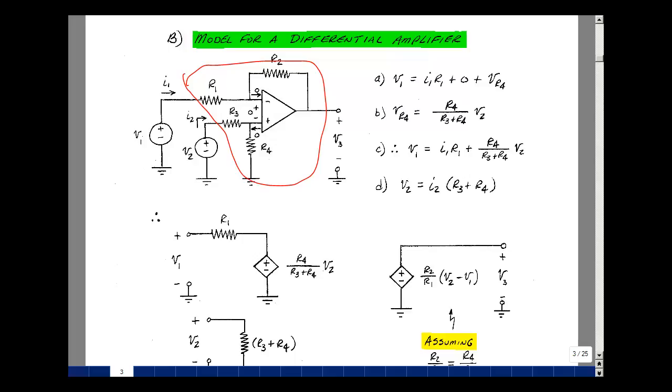Applying voltage V2, current's going to flow in this loop. Because the current in R3 is the same as R4, let me use the voltage divider. The voltage across R3 is R4 over R3 plus R4 times V2. I can substitute this back into the previous equation. This describes V1 in terms of I1 and V2.